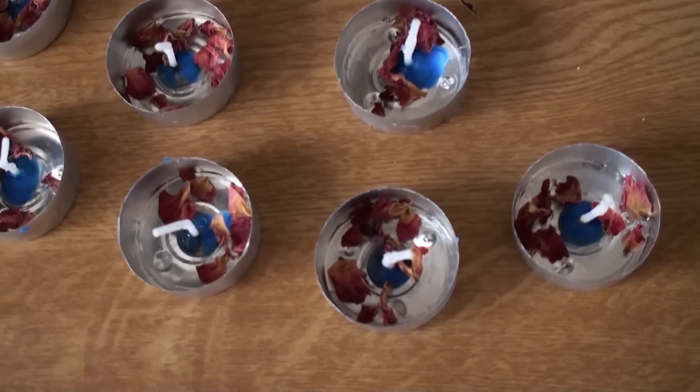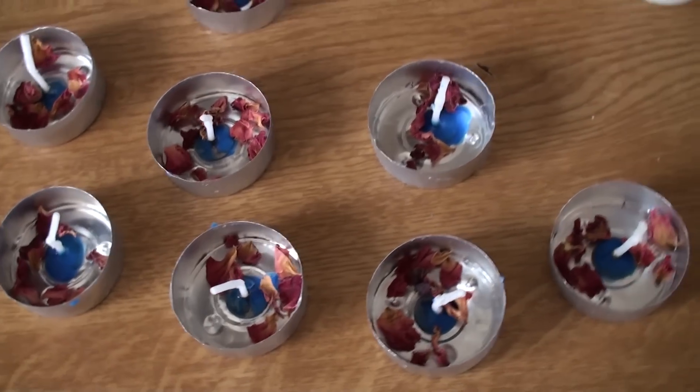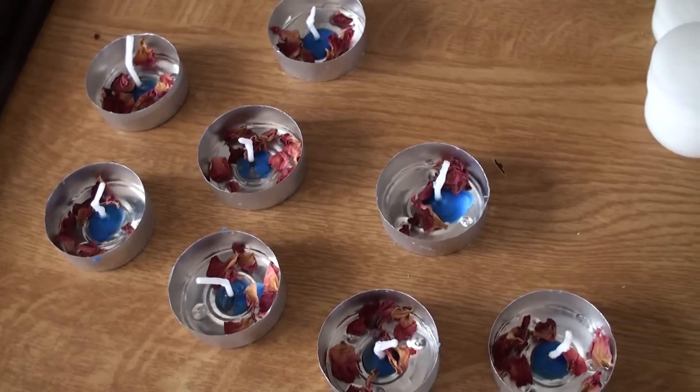So there we go. We have put some of the oil in and a few rose petals in each. Don't want to overfill them too much because they're only tea lights. So that's what they look like before they've had the wax poured into them.